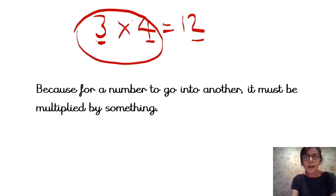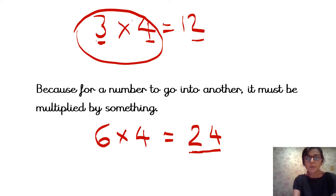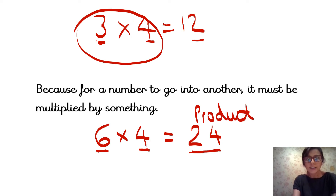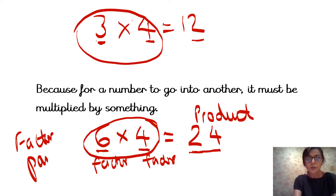Let's try another one. I'm going to say the number 24 as my product. So 24 is my product. I'm going to write a multiplication sequence — I'm going to choose 6 times 4. 6 times 4 equals 24. 6 is my factor, 4 is my factor, and my product is 24. So 6 and 4, that is my factor pair. Two factors have to be multiplied together to give me the product.